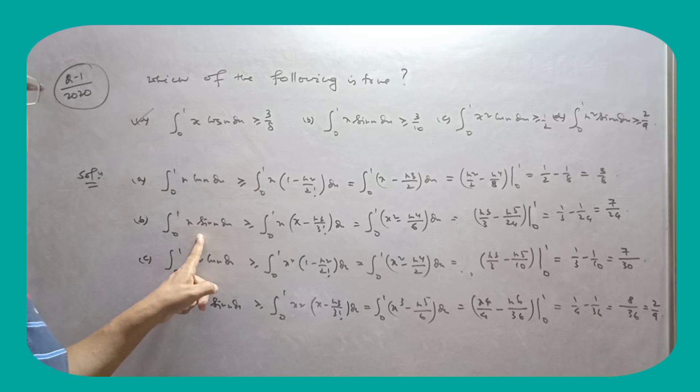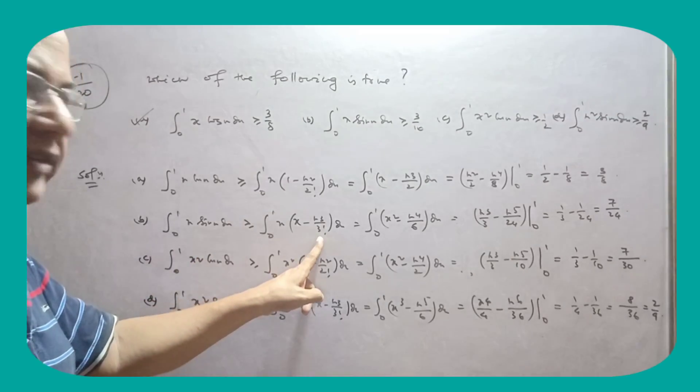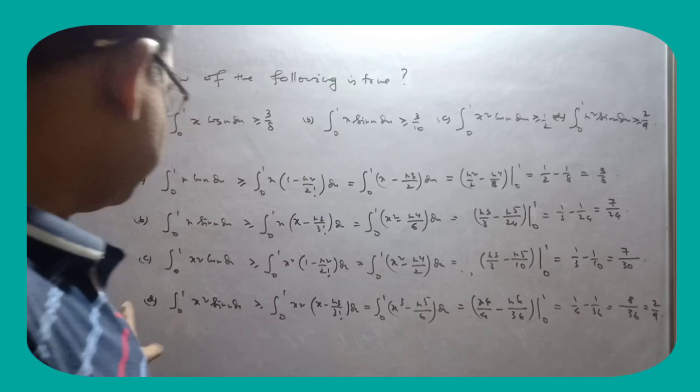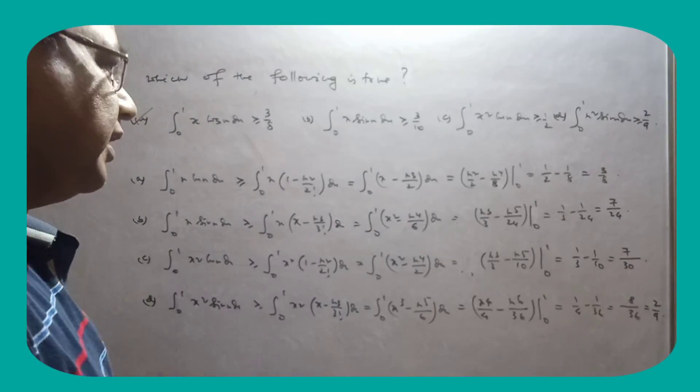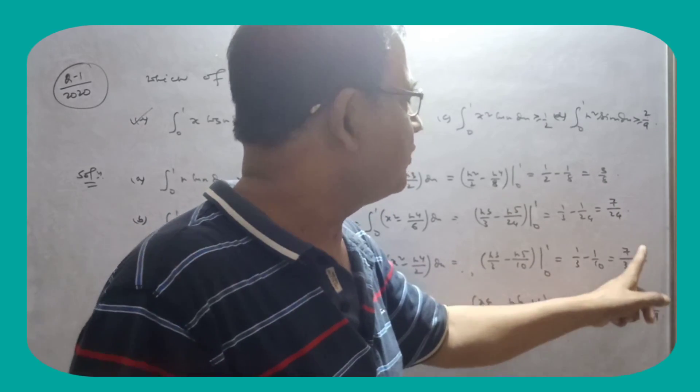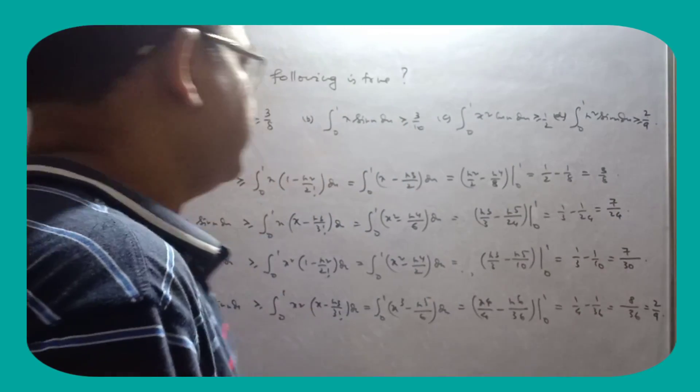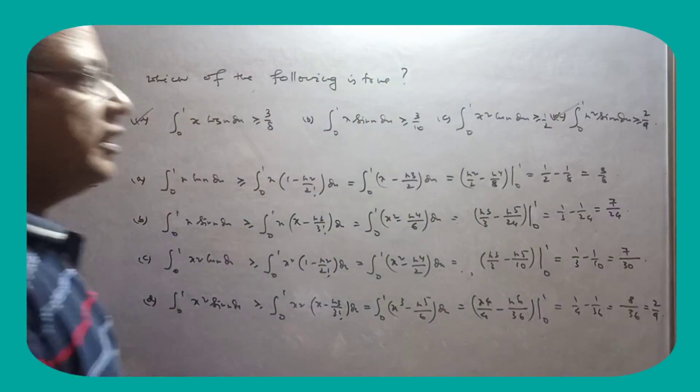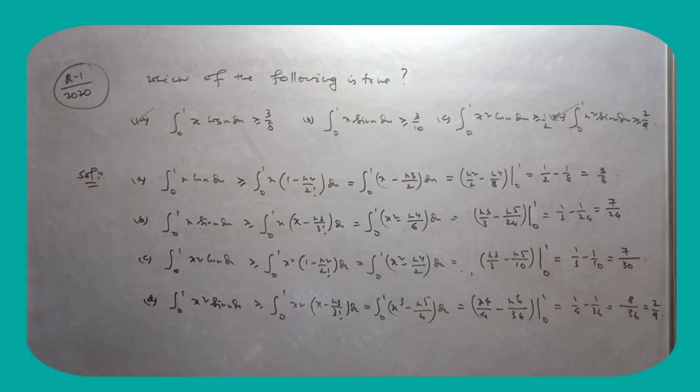Sin x, sin x functions x minus x cube by 3 factorial, x5 by 5 factorial, minus x7 by 7 factorial. O sare higher power ko neglect kar diya. So like this, kya sare functions hai. Diska value so like this. Yeh pe 3 by 8, 7 by 24, 7 by 13 and 2 by 9 hai. So that means these options as well as these options are right one hai. So my dear friends, fantastic question hai. This is 2020 mei poocha gaya tha.